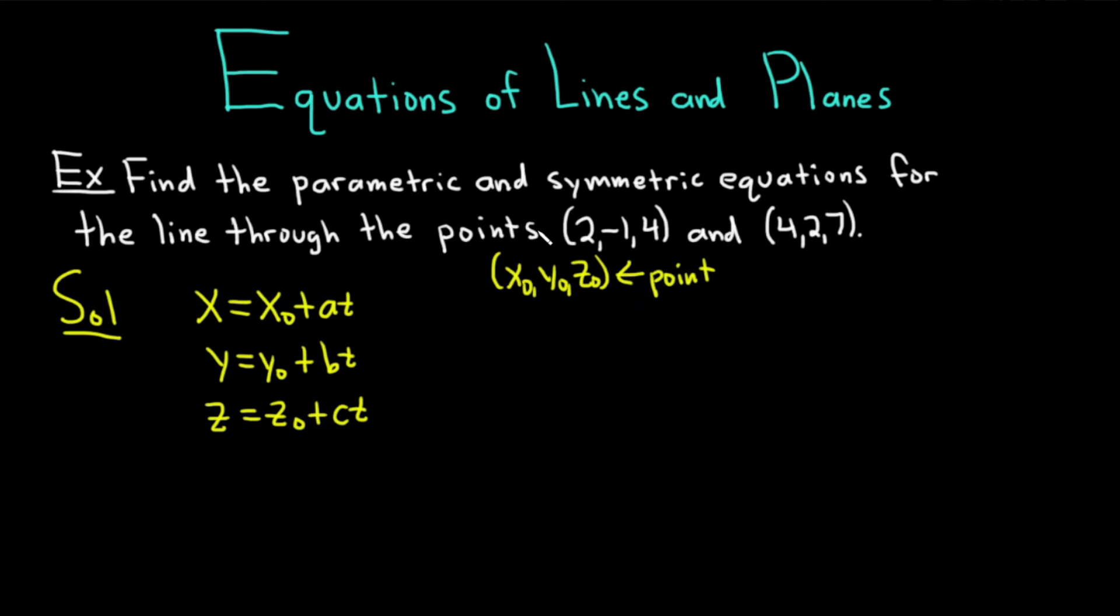And abc, those are the components of a vector that is parallel to your line. So to find the equation of a line in space, you basically need a point on the line and a parallel vector, which in this case we're calling v. These are the parametric ones.